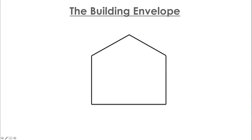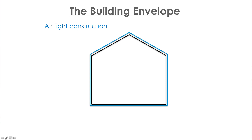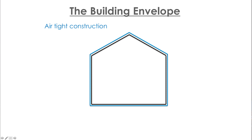The next step is the way we build — it's all about the building envelope, which is what surrounds the parts of the house we live in all the time. First is an airtight layer surrounding the whole building envelope — a layer that isolates the indoor climate from the outdoor climate and also helps with moisture control. Next we have a continuous layer of insulation, again around the whole building envelope.